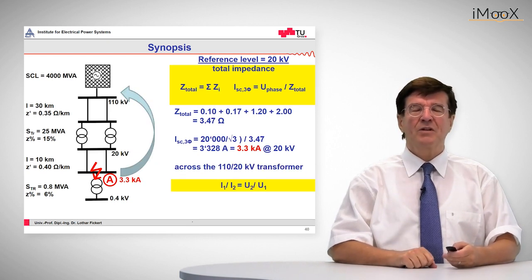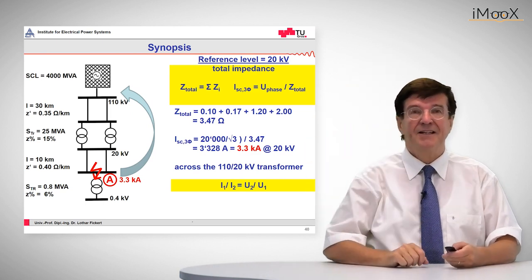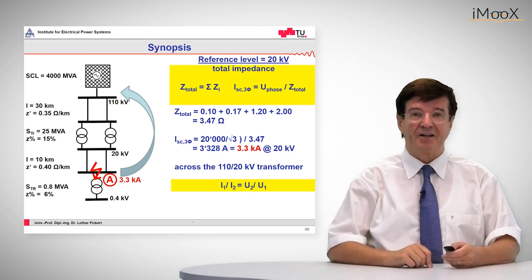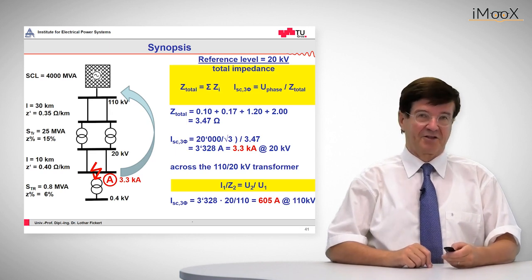Now the question is, what is this current seen from the high voltage side 110 kV? That is given through the transformer by the inverse of the voltage ratio, and the outcome is 605 amps go from the superceding grid into this medium voltage grid fault.